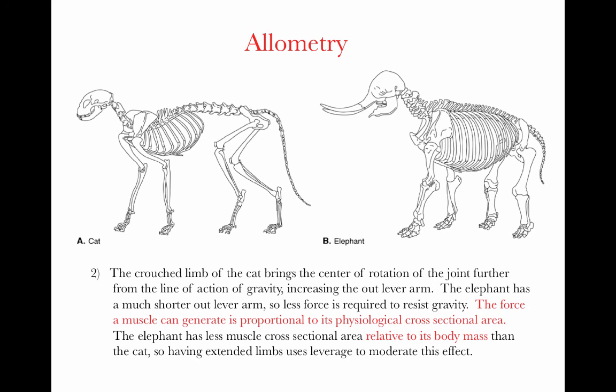The force a muscle can generate is proportional to its physiological cross-sectional area. The elephant, even if that cross-sectional area increases disproportionately to other parts of the body, will still have less muscle cross-sectional area relative to its body size compared to the cat. It will be absolutely bigger but lower relative to its body mass. Body mass is what it's holding up, so that's what the muscles are resisting.